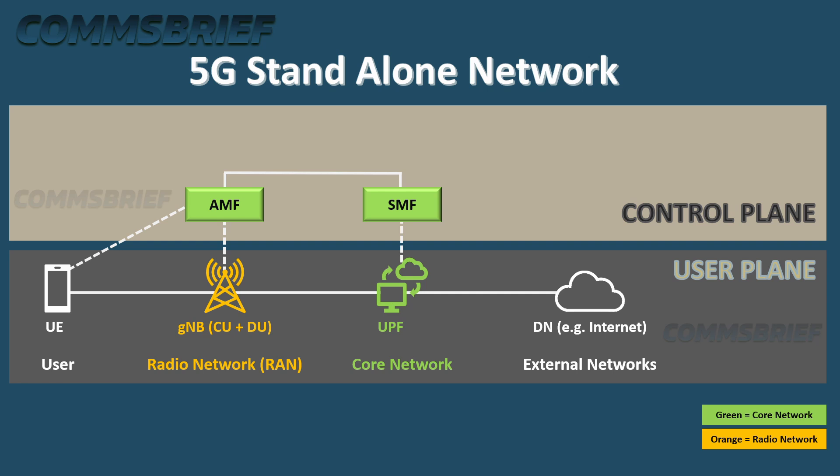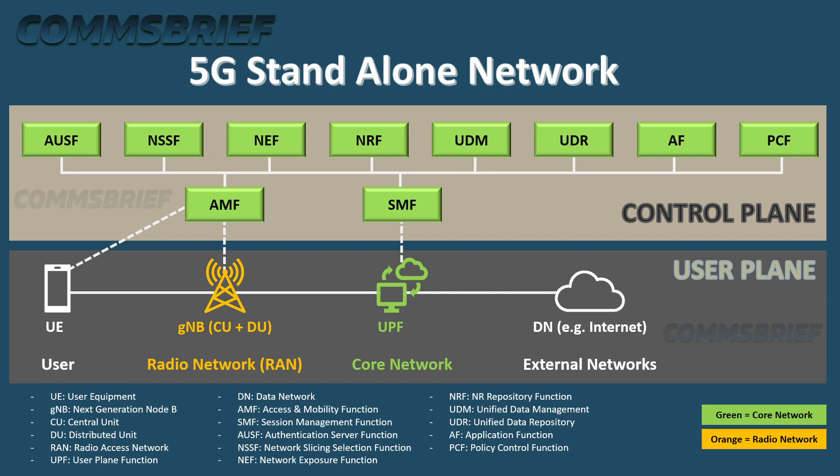A mobile phone is connected to the base station gNB, linked to AMF and UPF in the core network. The UPF — user plane function — connects a mobile phone via the gNB to outside networks like the internet. UPF is connected to the session management function (SMF) in the control plane. UPF oversees service quality and applies policies that the PCF (policy control function) sends via SMF. There can be more than one UPF, and for low-latency communication, a local UPF can be used to avoid transmission delays due to long distances.